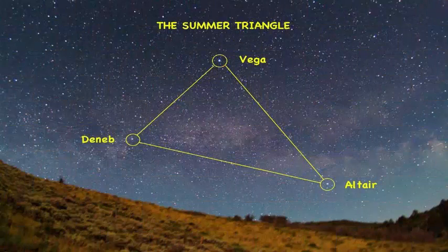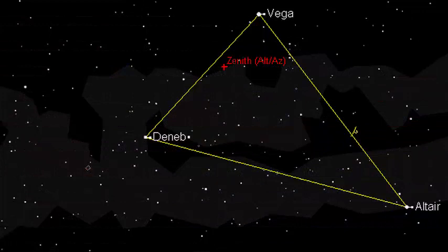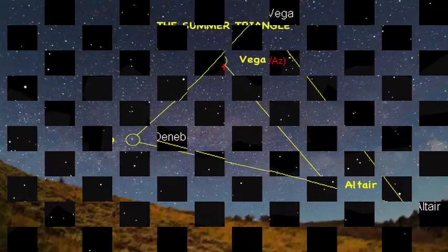The pattern is almost isosceles, which means that it appears as a triangle with two sides of equal length. The brightest of the three is the bluish-white Vega, in the constellation of Lyra, the lyre.